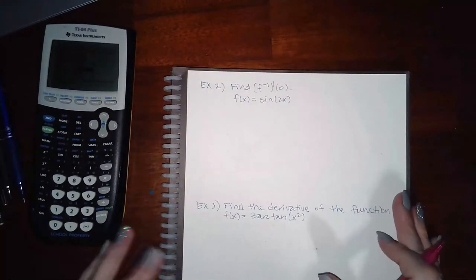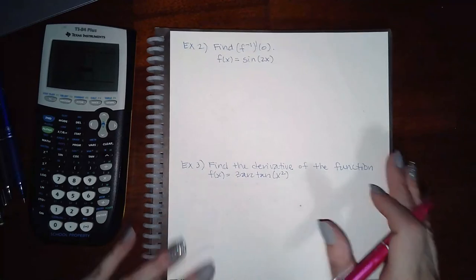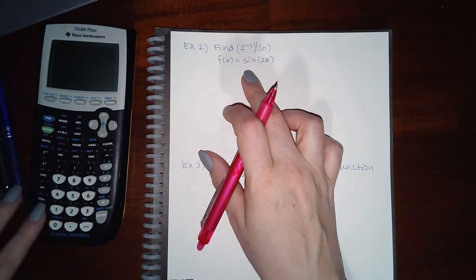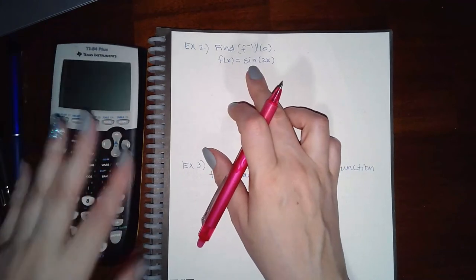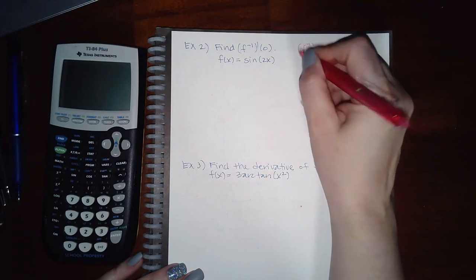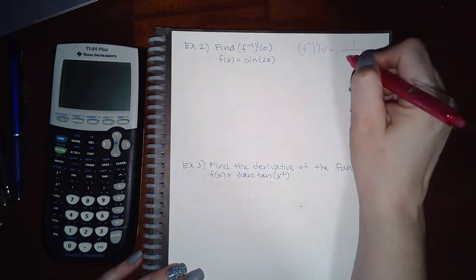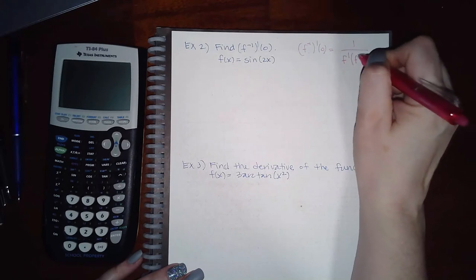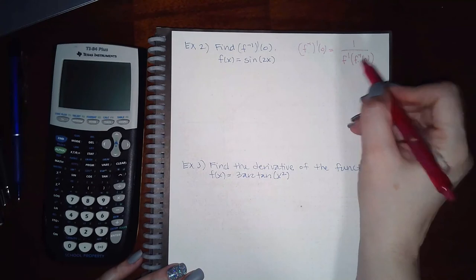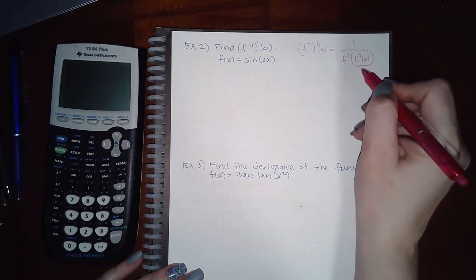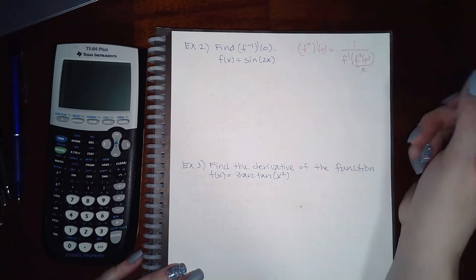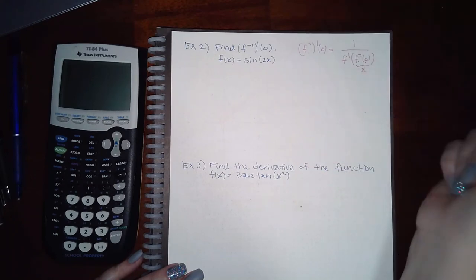The next problem is a bit more difficult because it involves a trig function, but the process is the same. We want to find f-inverse′(0), which means we need 1 / f′(f-inverse(0)). The output of f-inverse(0) is an x-value, so we need to find that x and compute f′ at that point.